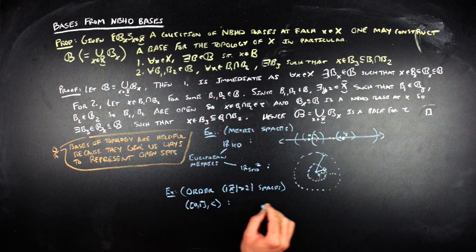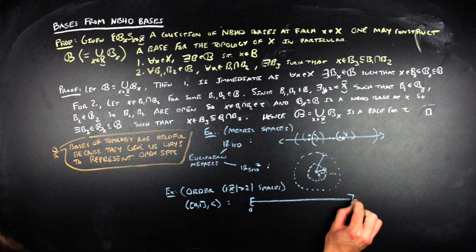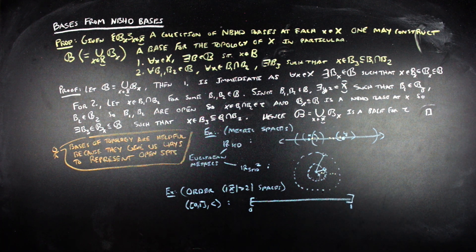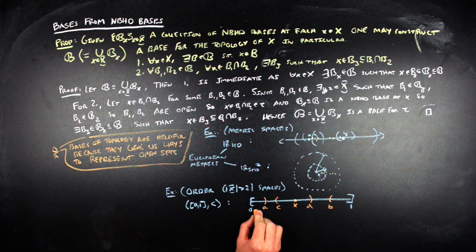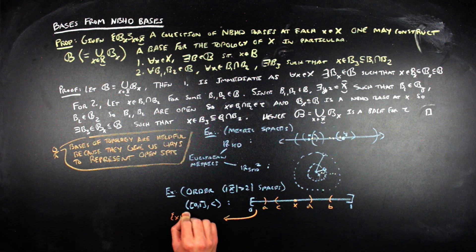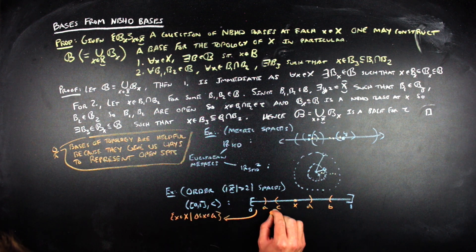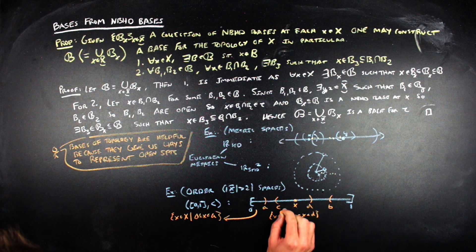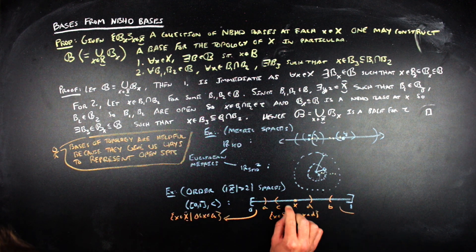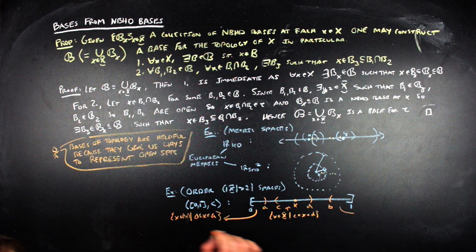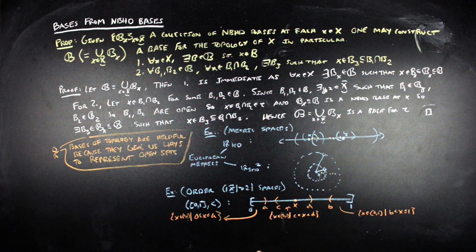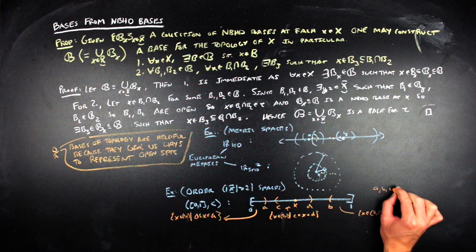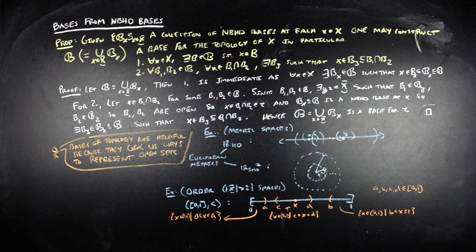For example, if we're looking at the closed interval from 0 to 1 with the less-than ordering, the open things are the open intervals about a particular point, and then we worry about 0 and 1. In the case of 0, the open intervals look like [0, A), and for 1 they look like (B, 1]. Or in other words, 0 ≤ x < A for 0, and B < x ≤ 1 for 1.